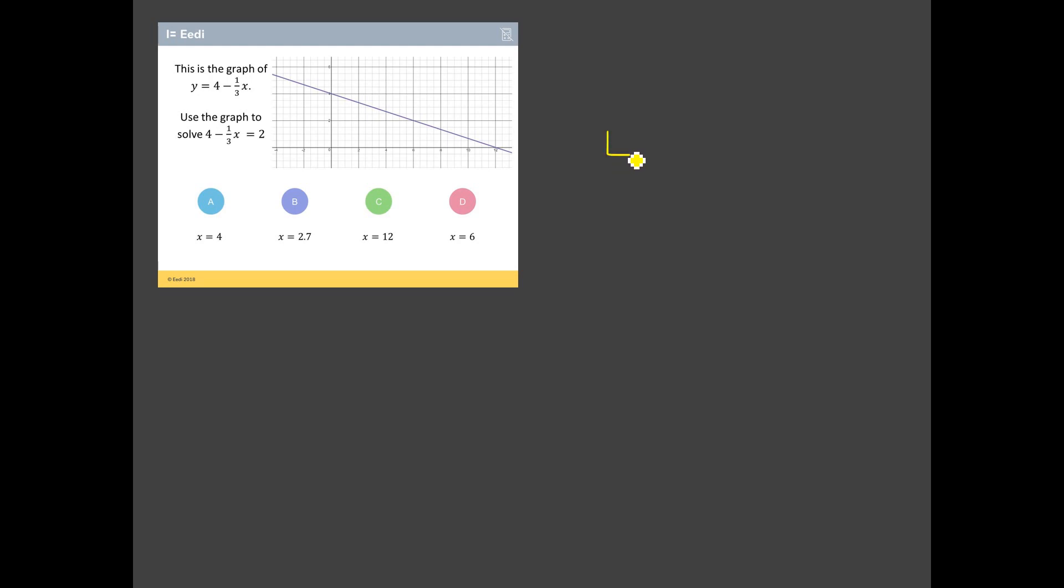And it is this question here on graphs. This is the graph of y equals 4 minus a third x. Use the graph to solve 4 minus a third x equals 2. Now here's the way to think about this. We've got this equation here: 4 minus a third x equals 2. Now we could go ahead and solve that equation, but it says use the graph to solve it. The way to think about this is that graph already shows us this line here. That's the purple line on the graph. This here equals 2 is like thinking about the line y equals 2. The way to rephrase this question, the way I like to think about it, is that this question is actually saying, where does this graph, y equals 4 minus a third x, where does it intersect with this graph or this line, y equals 2? Because that's all this equation is saying. It's saying where does this equal this?